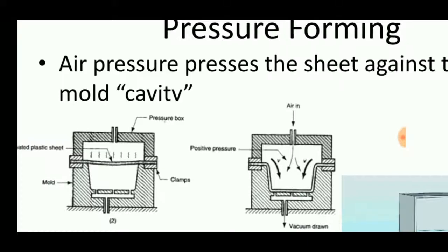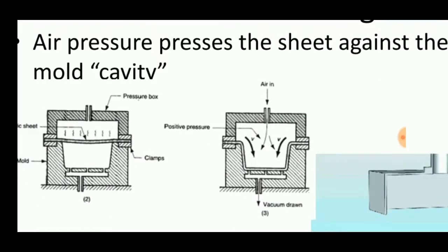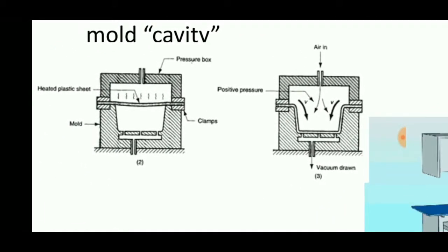In this process, air pressure is used to perform the forming operation. The sheet metal is placed on the support, and the upper part is brought into contact with the lower part, then sealed. Finally, air is inserted over the sheet.